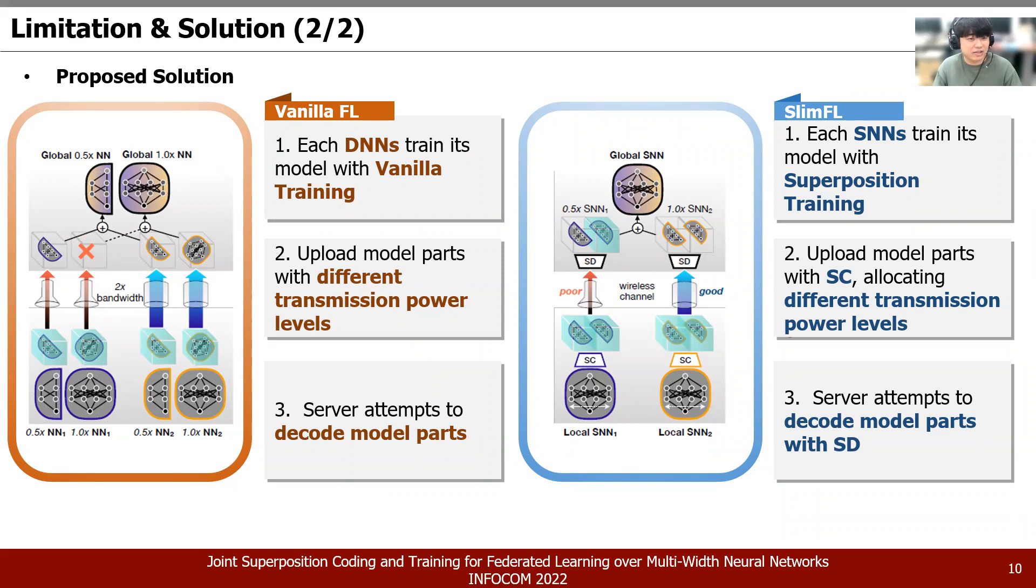Vanilla effort uses DNNs and trains these networks with vanilla training. Vanilla effort uploads the model with different transmission power. Our SlimFL adds the superposition coding and successive decoding method to this environment. When compared to the original effort on the left, it failed to transmit parameters at the orange circle because the full width of the model in a poor communication environment could not be transmitted. On the other hand, half of the parameters were successfully transmitted to the server when SlimFL was used in the blue circle, which clearly shows the advantage of our proposed model.